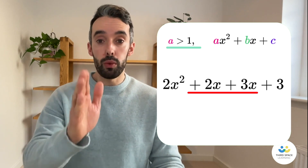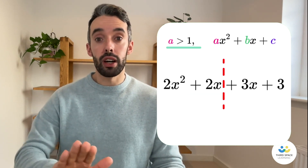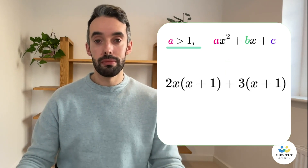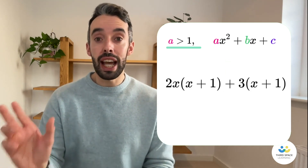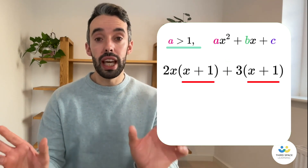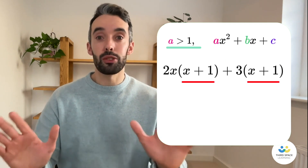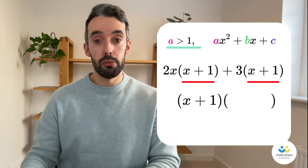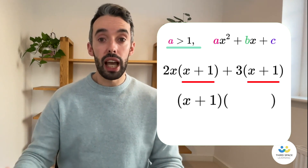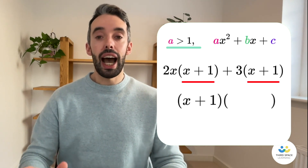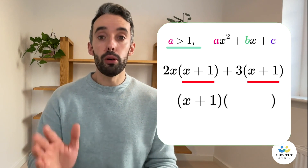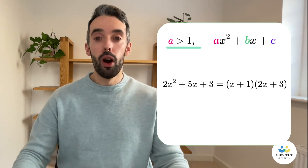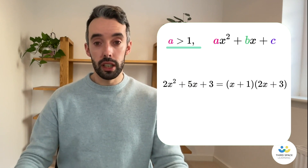Next, we split it right down the middle and fully factorise the left-hand side, then fully factorise the right-hand side. Now you'll notice that we've got an x plus 1 in both of those brackets, and that's great news, because we can just bring that to the front and factorise it one more time. So at the front now we have x plus 1 in a bracket, and in the second bracket we put what's left: 2x and plus 3. And there we go, fully factorised.